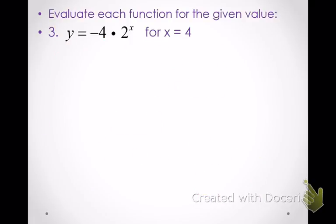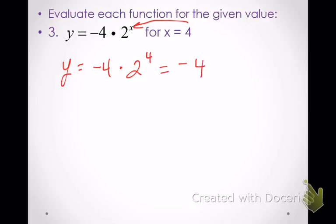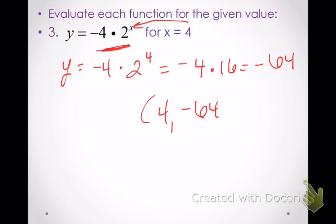For the next example, we plug in 4 for x, giving negative 4 times 2 to the 4th. We do 2 to the 4th first: 2 times 2 times 2 times 2 is 16. Then 16 times negative 4 is negative 64. So this function takes 4 as an input and maps it to negative 64 — that point would be on this function's graph.